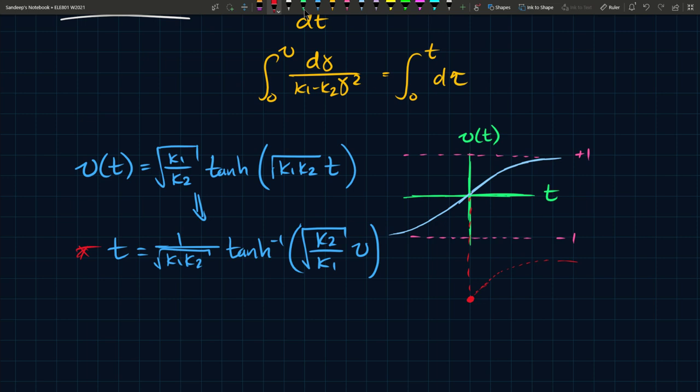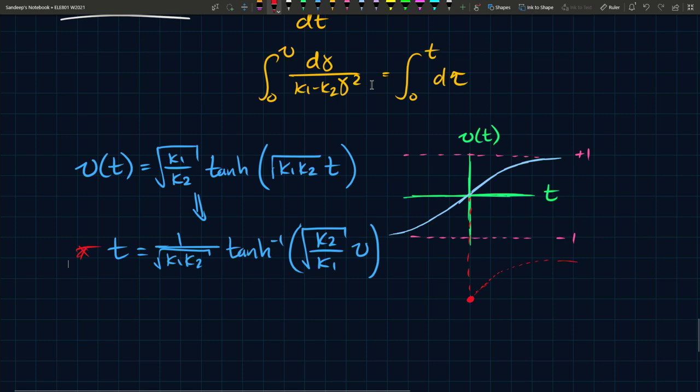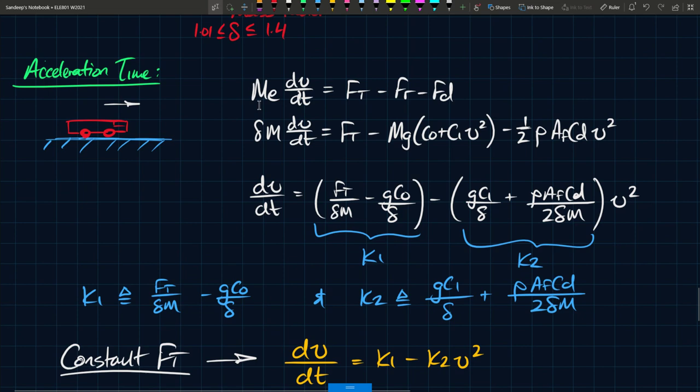One thing you should understand is there's an assumption that we made here. The assumption is first of all that F_T is constant, and the second assumption is that this is level ground. So if either of these two things change, this analysis becomes a bit more involved and it's not this simple, but you can still use certain elements of this concept in your solution if that is the situation you have.